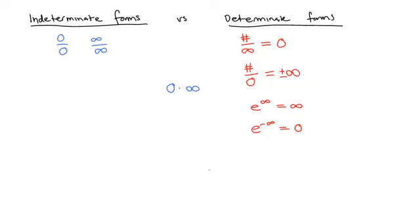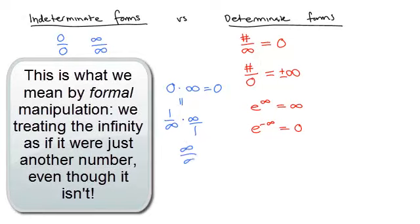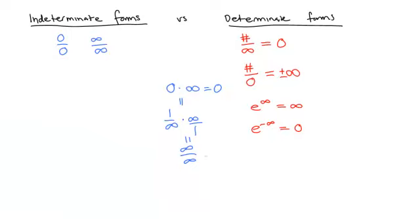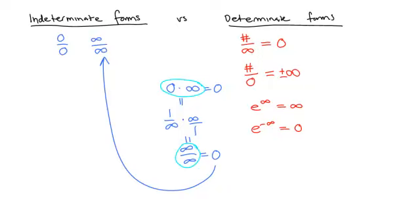What about 0 times infinity? Many people say it should be 0, since 0 times anything is 0. However, since 0 equals 1 over infinity, we have 0×∞ = (1/∞)×∞ = ∞/∞, which is indeterminate. If 0 times infinity were always 0, then infinity over infinity would always have to be 0—but Calc 1 taught us that ∞/∞ is indeterminate. So 0 times infinity must also be indeterminate.